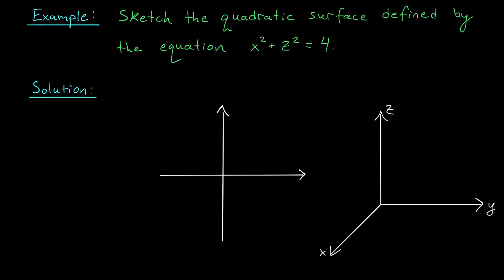but in this case, I think the vertical traces might be a little bit more helpful. You see, there's no y present in this equation. So it might be interesting to ask ourselves, what do we get if we set y equal to k?